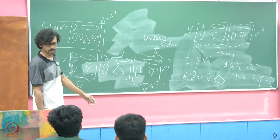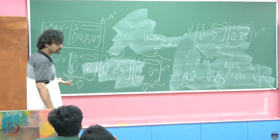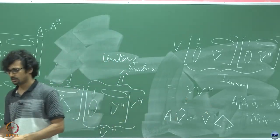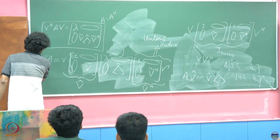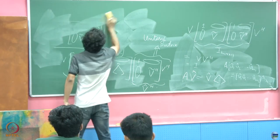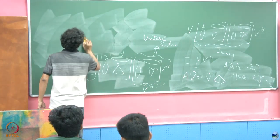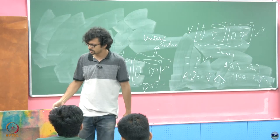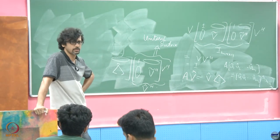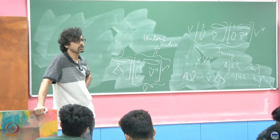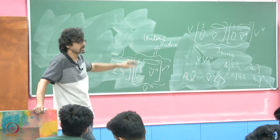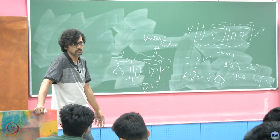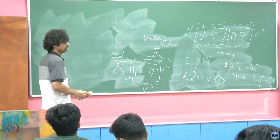This establishes that whenever a matrix is diagonalizable using a unitary matrix, the eigenvectors are orthogonal — because we diagonalize using eigenvectors, and if it is unitarily diagonalizable, the eigenvectors form an orthonormal basis. This is a great property, and we will now see an elegant application to something you have learned in high school.